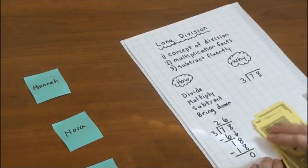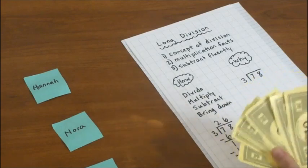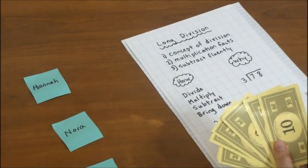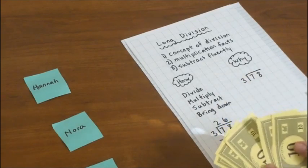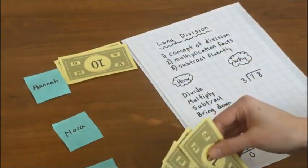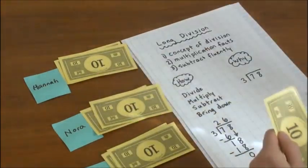So to divide the $78 among 3 kids, we'll start with the tens. We're going to first act it out with the money and then we will record what we did. So 7 tens divided by 3 equals 2 tens for everybody. It's 2 tens for Hannah, 2 tens for Nora, and 2 tens for Aiden. We have 1 ten left.